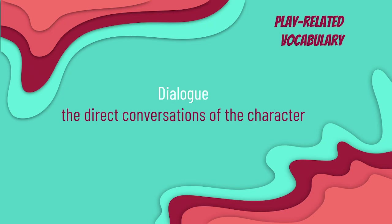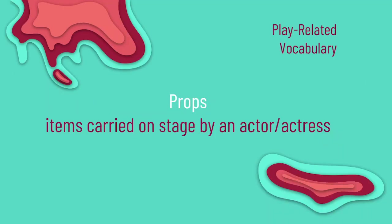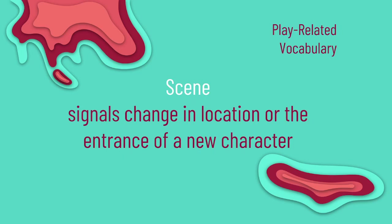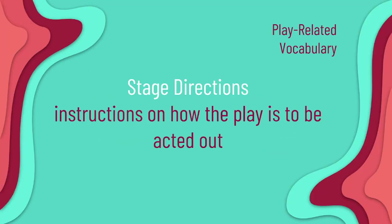Dialogue — the direct conversation of the characters. Exposition — found at the beginning of a play and provides background information, events, and introduces the characters. Props — items carried on stage by an actor or actress. Scene — signals change in location or the entrance of a new character. Script — the written text of a play. Stage directions — an instruction written into the script of a play, indicating stage actions, movements of performers, or production requirements.